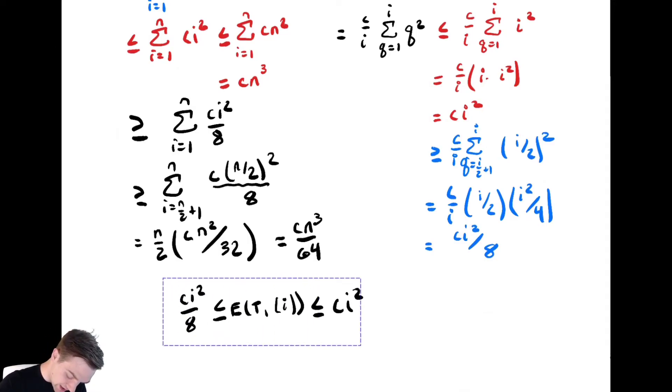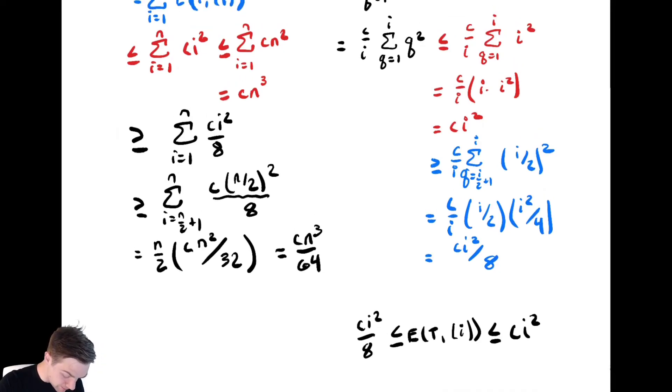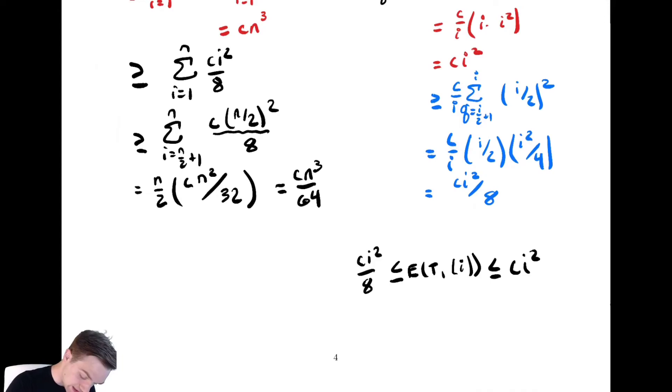So it's bounded above by cn³, bounded below by cn³ over 64. So ET(n), the expected runtime as a function of n, is in theta of n³.